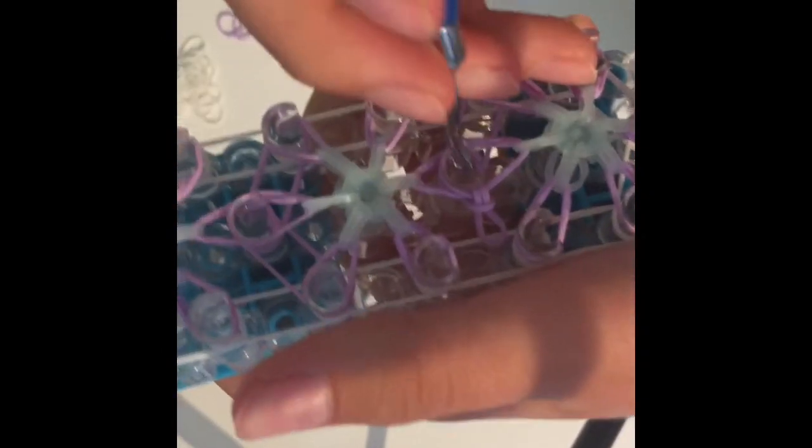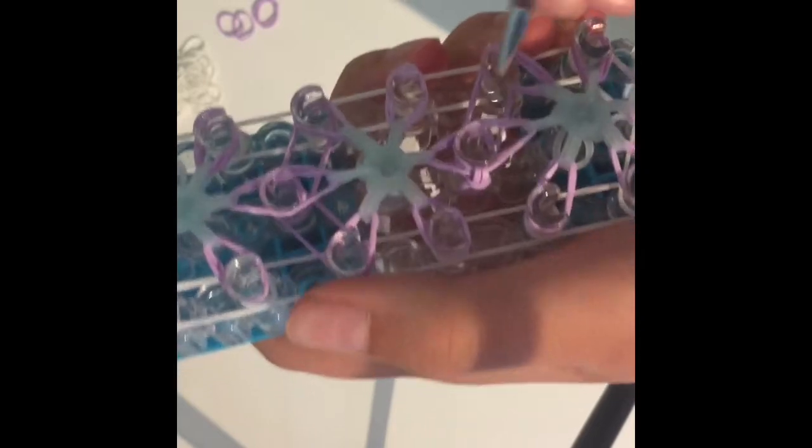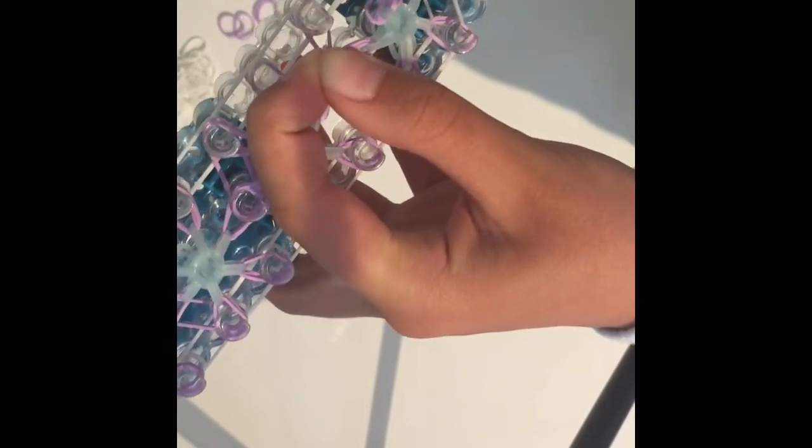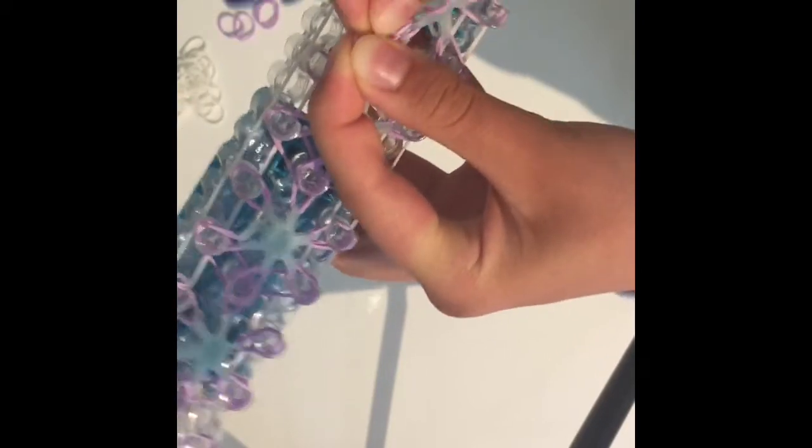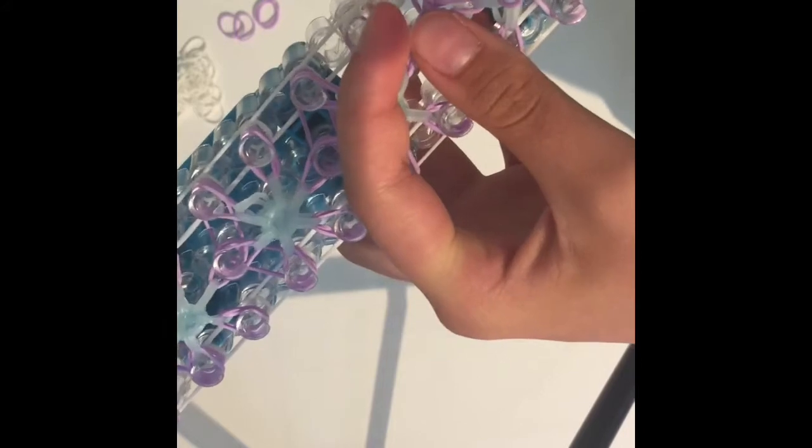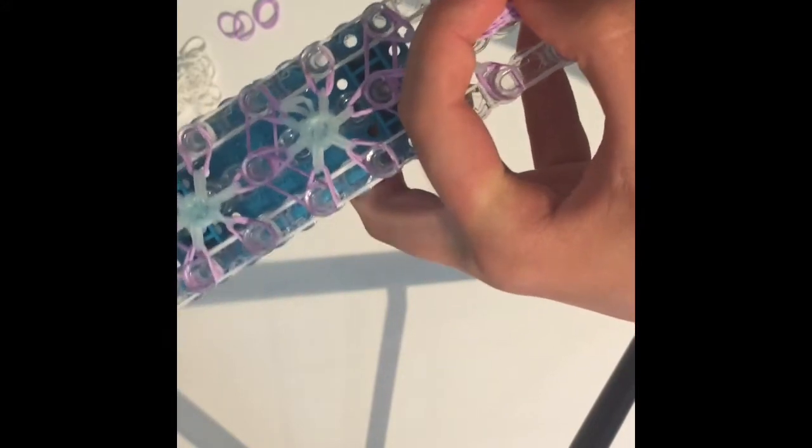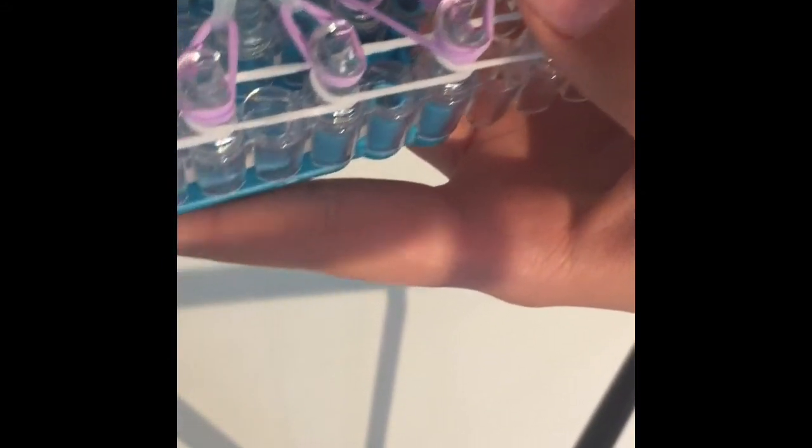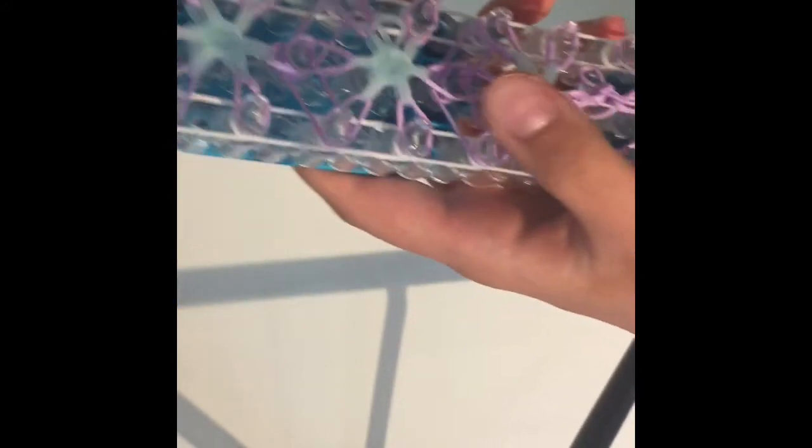And do the same on your other side. Make sure this is nice and tight though, so it stays in place. You can always tighten it later. So now you're going to go all the way up your loom with the slip knotted bands like this. You're just going to keep doing that all the way up your loom. Come back to me when you're done.